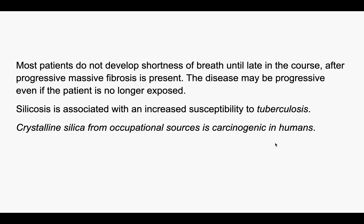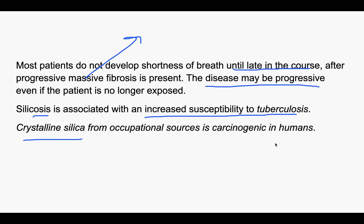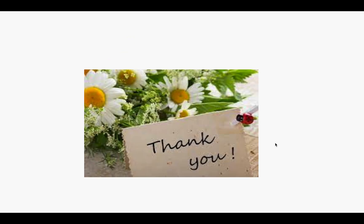Regarding clinical presentation, these persons mostly do not develop any shortness of breath until late in the course — until the stage of progressive massive fibrosis. Also, at this stage, even if the patient is no longer exposed, the disease will still be progressive. Regular monitoring of workers should be done in these occupations. Silicosis has increased susceptibility to tuberculosis, and crystalline silica is also known to be carcinogenic.